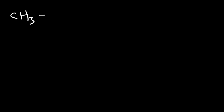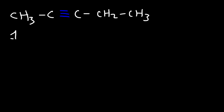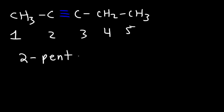Here's another one. Write the IUPAC name and also the common name of this particular alkyne. For the IUPAC name, we need to number in such a way that the alkyne has the lowest possible number. This is carbon 1, 2, 3, 4, 5 — so that's pentane, but instead it's going to be pentyne. The triple bond is between carbons 2 and 3, so we pick the lower number. This is going to be called 2-pentyne.